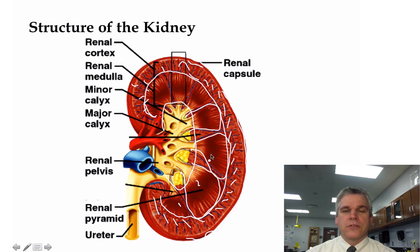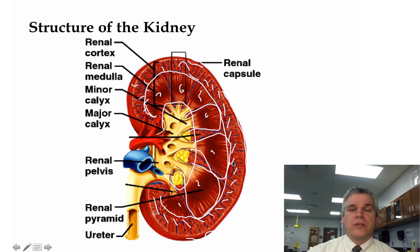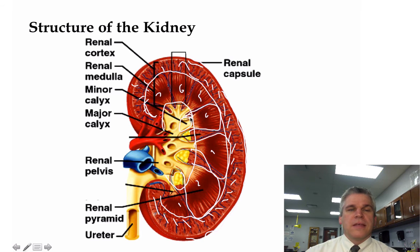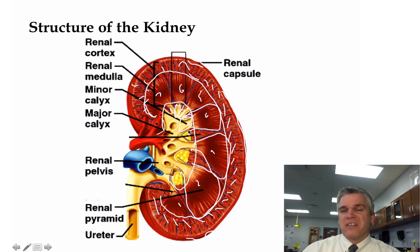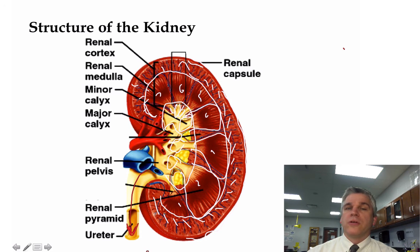We can see there are seven renal pyramids in this particular drawing where urine is being made. Once the urine is made, it's going to be funneled into the renal pelvis through a series of smaller funnels. The smallest is called a minor calyx. There's another series of minor calyces that then drain into a bigger funnel — that would be a major calyx. Here we see some of the major calyces that will then drain into the ureter, which takes the urine to the urinary bladder where it will be stored until we're ready to release it.